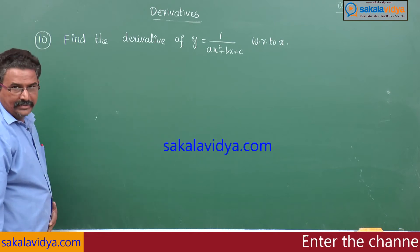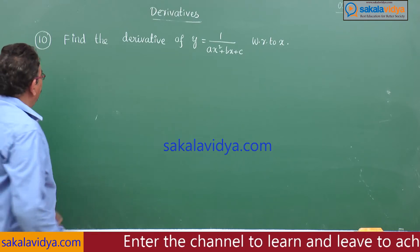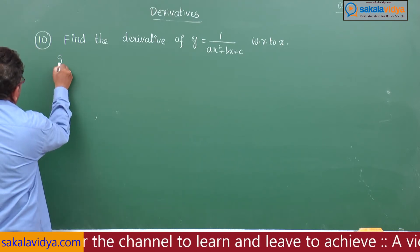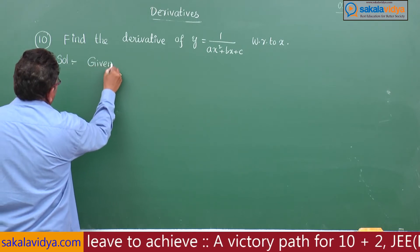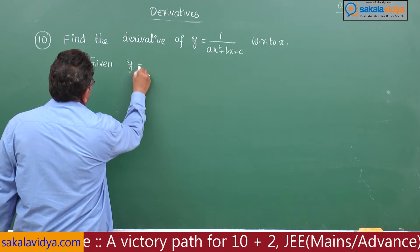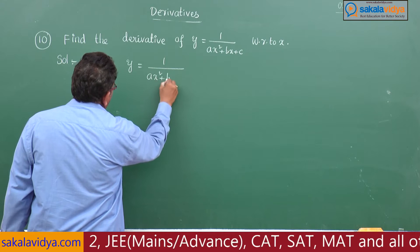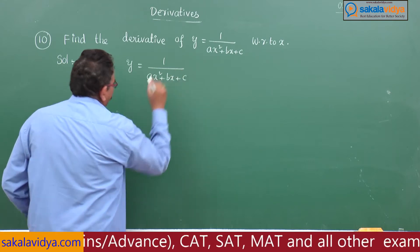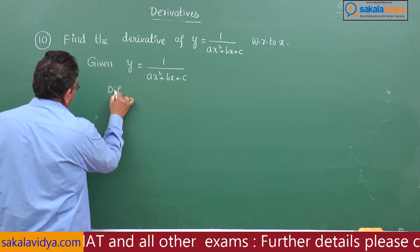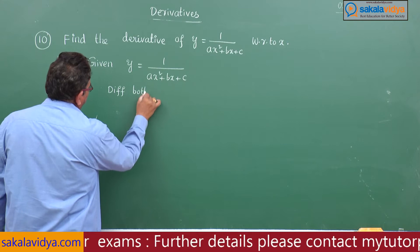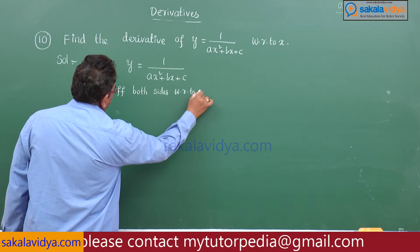Find the derivative of y equals 1 by ax square plus bx plus c with respect to x. Here, given y equals 1 upon ax square plus bx plus c, differentiate both sides with respect to x.